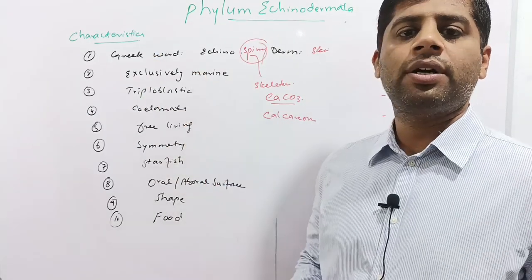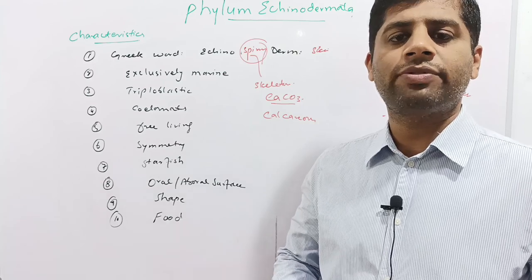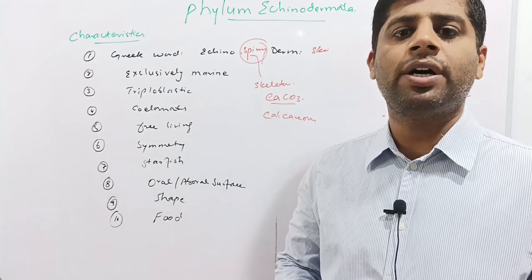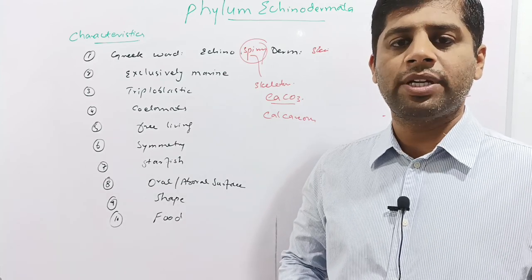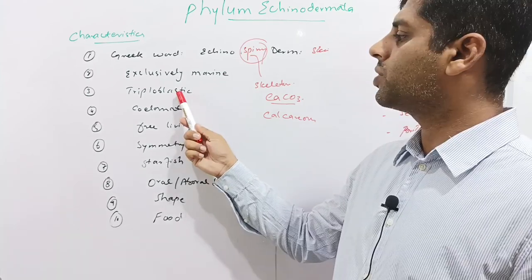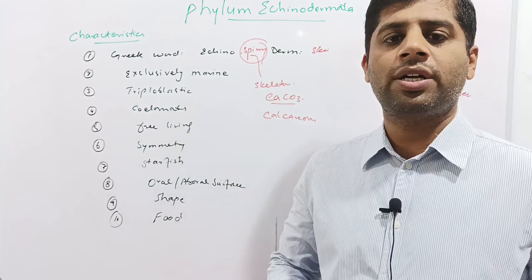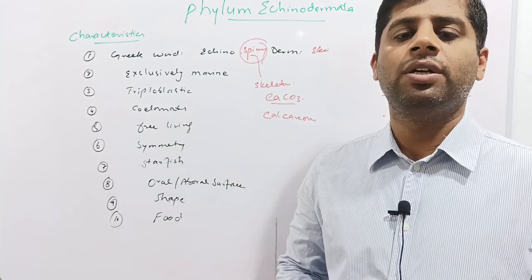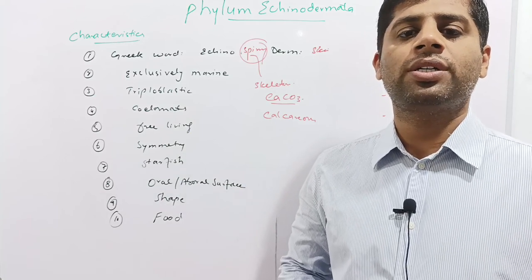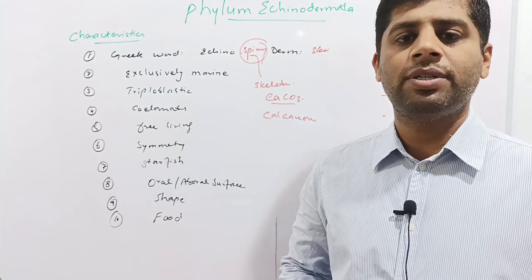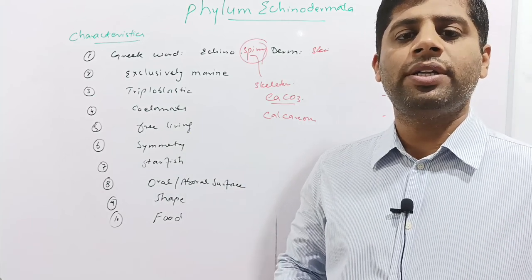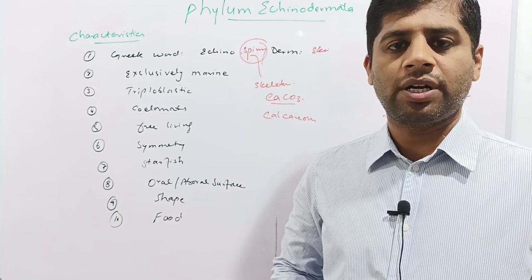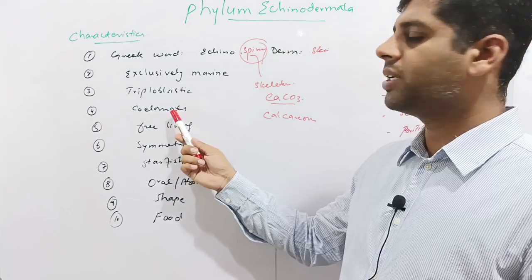All the members of the Phylum Echinodermata are marine, so they are called exclusively marine. They are triploblastic because the body is composed of three layers: the outer layer is called epidermis, the middle layer is called dermis, and the inner layer is called peritoneum.